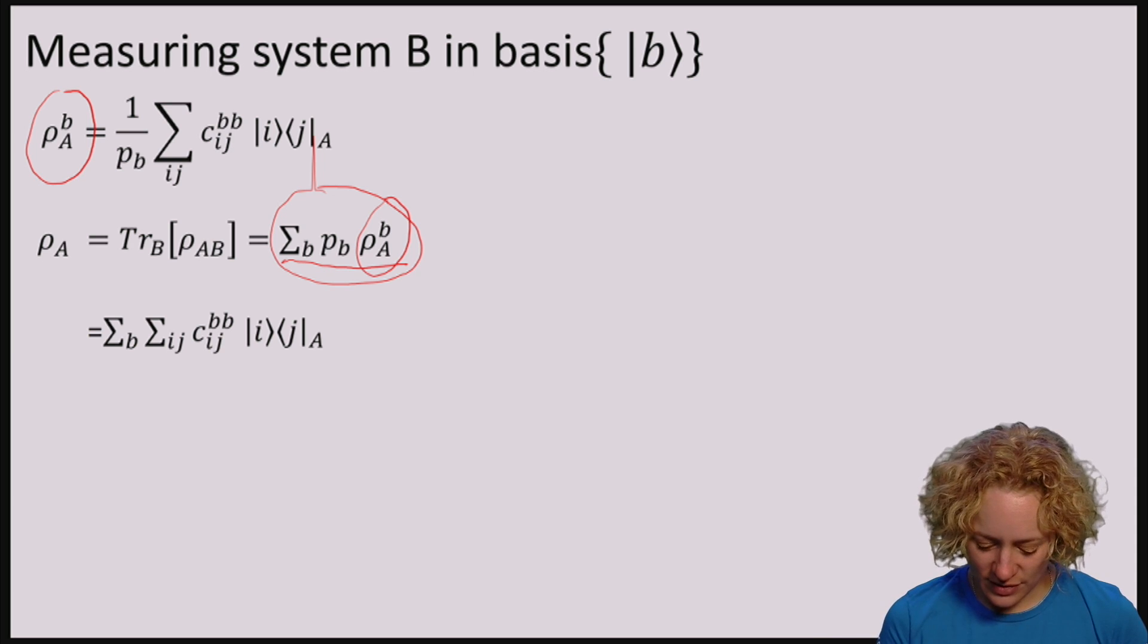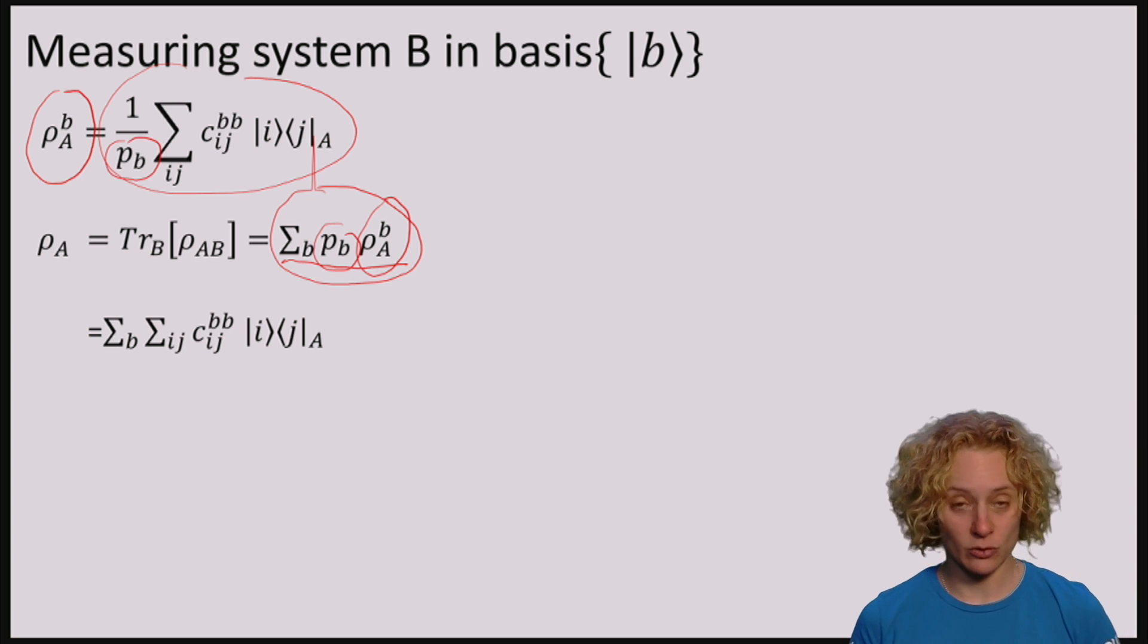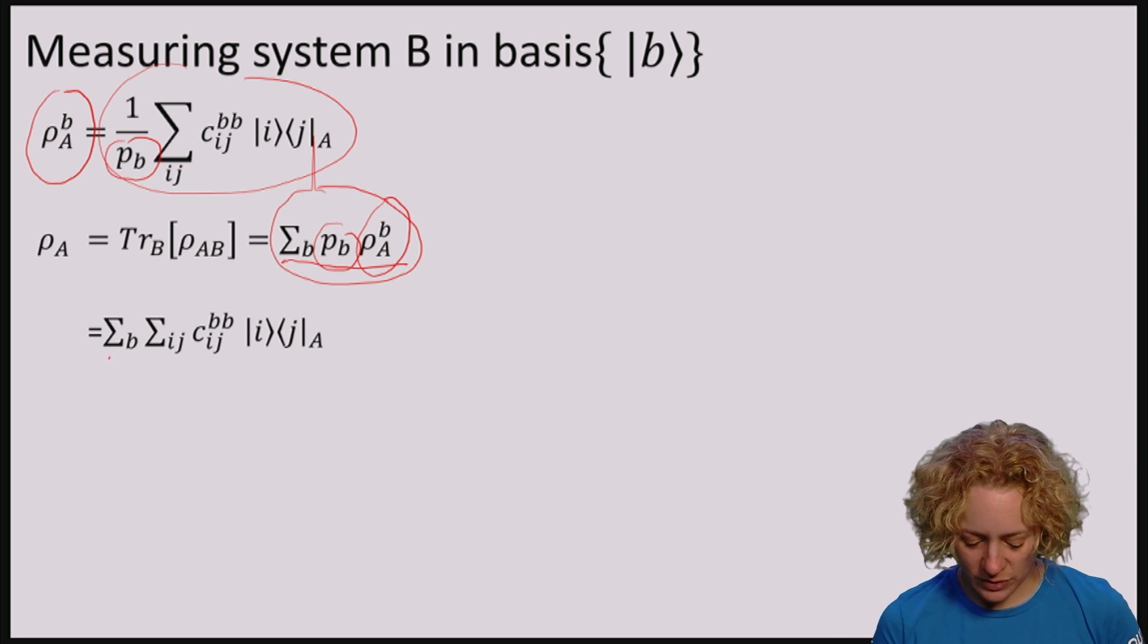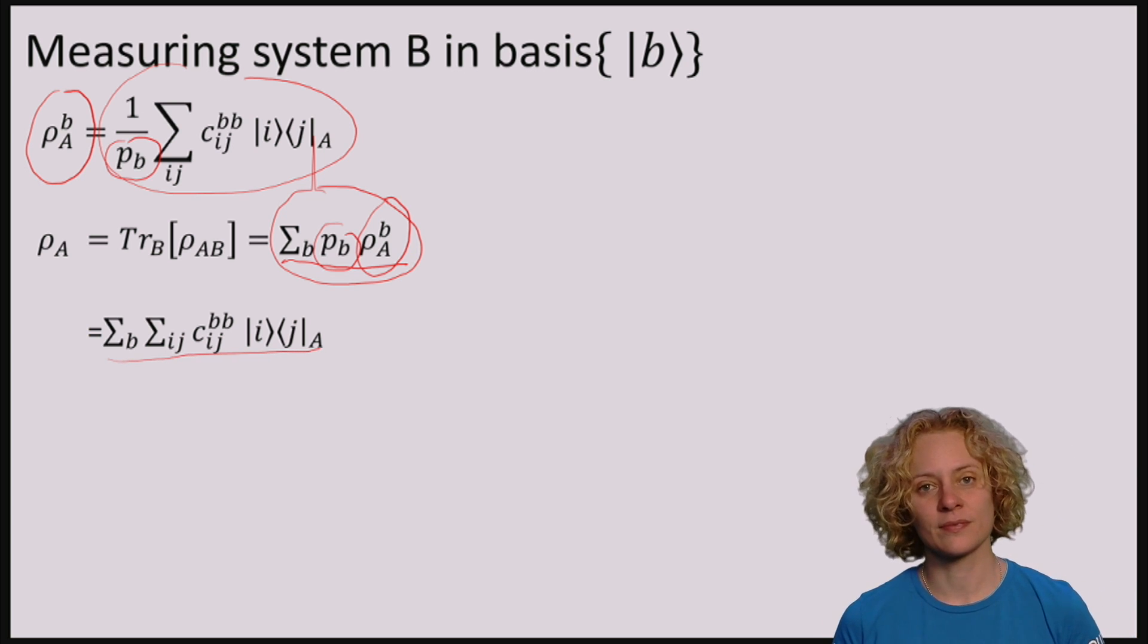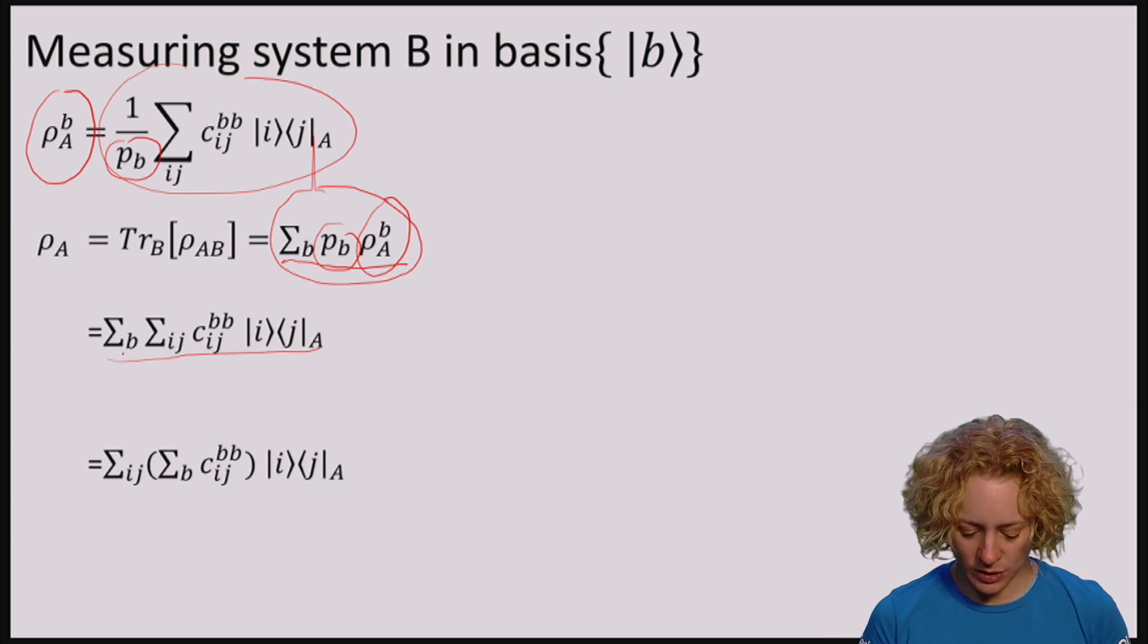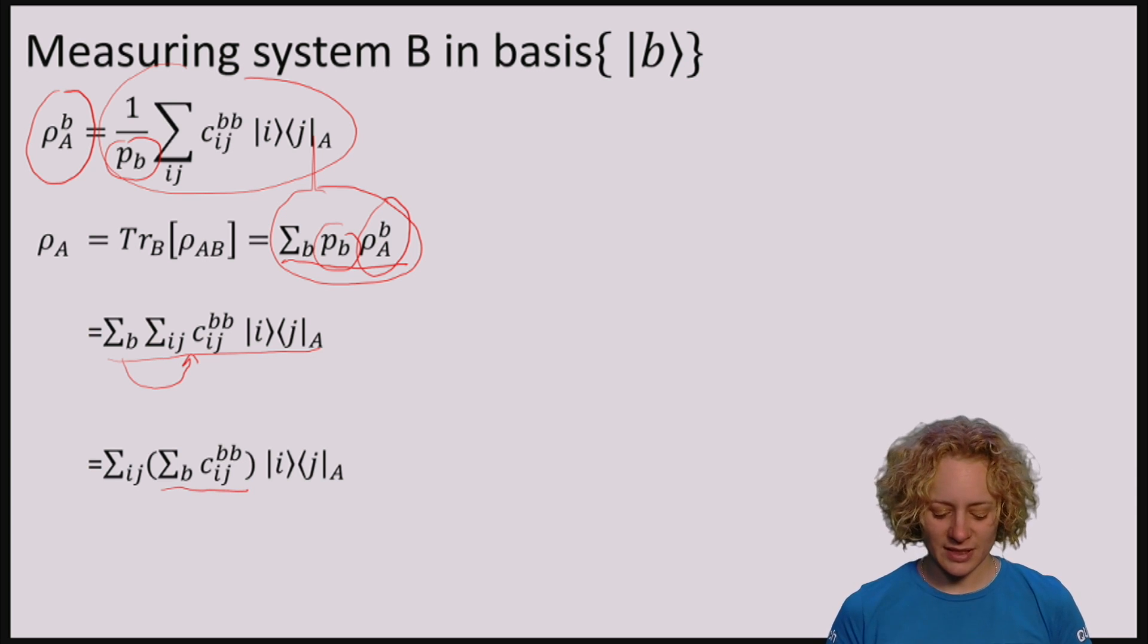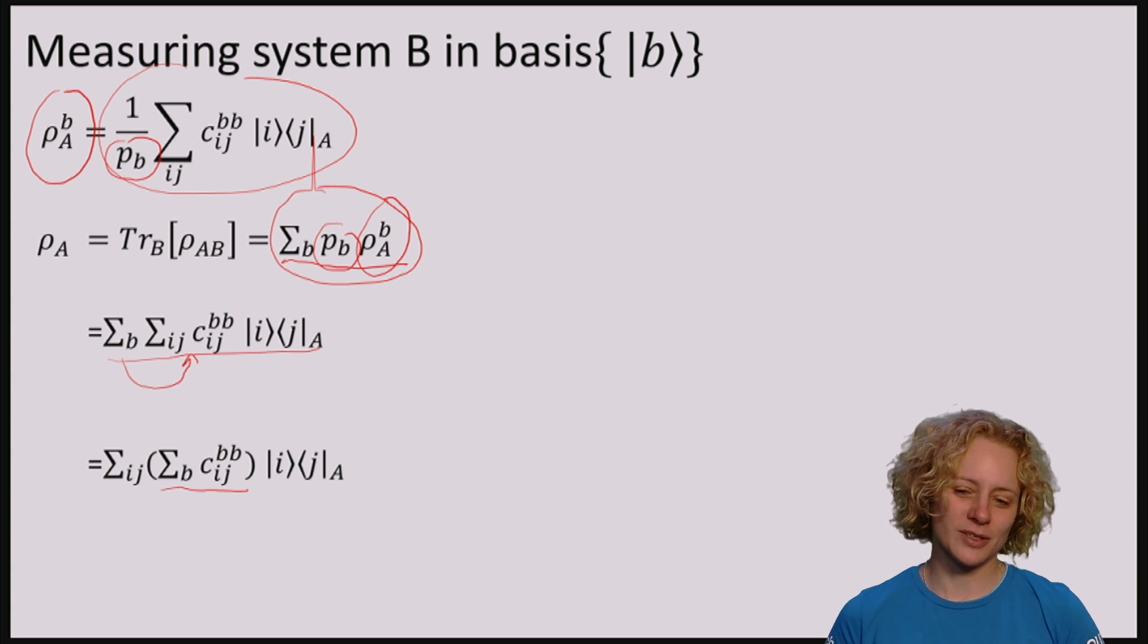So let's have a look at this to see whether it coincides with our rule developed in the earlier video. So what I've done here is I've just taken this expression, I've plugged it in here, and because I have P_B, and I divide by 1 over P_B, this factor goes away, and I'm left with just this. So let me rearrange this by putting the B inside, so I end up with this sum. And you may observe that this is exactly how we had computed the partial trace.